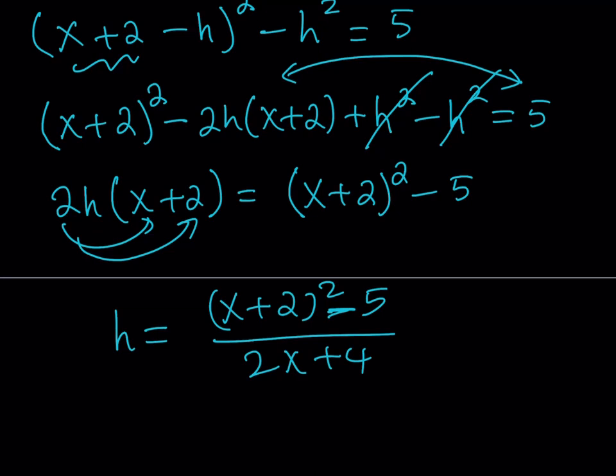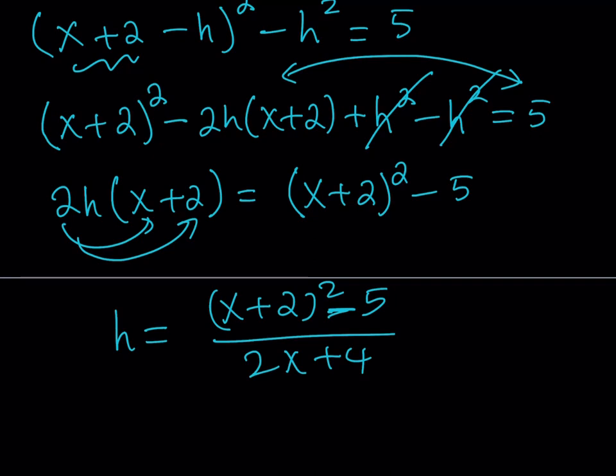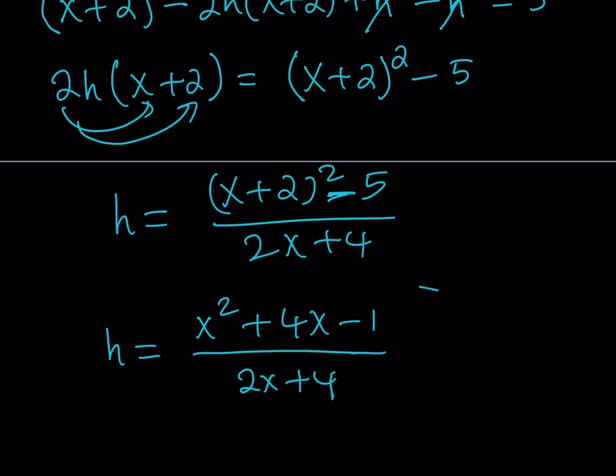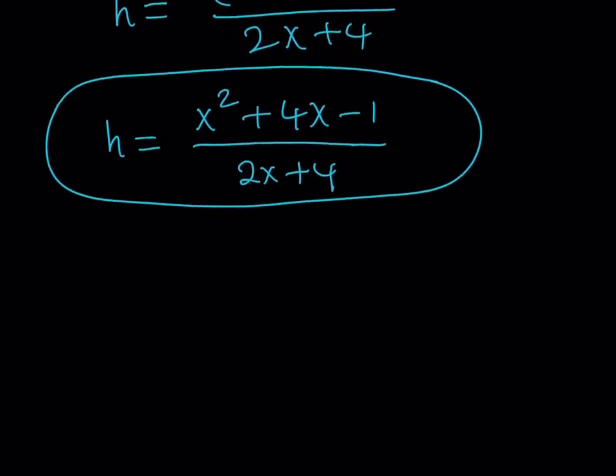This is really nice because we were able to get H by itself, but also in terms of x. So it's cool. Now let's simplify this a little bit more. This is going to be x squared plus 4x plus 4. So if you simplify the constants, you're going to get x squared plus 4x minus 1 divided by 2x plus 4. So I was able to get H in terms of x.